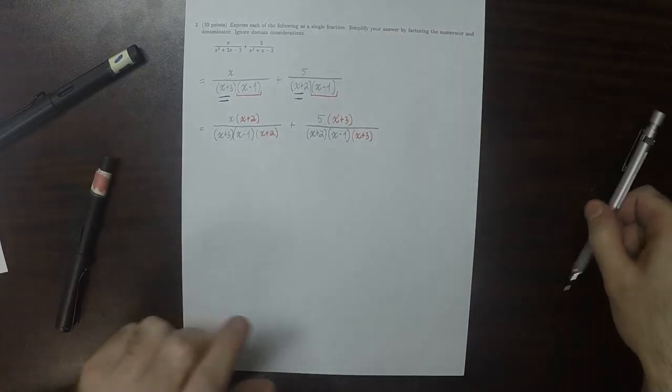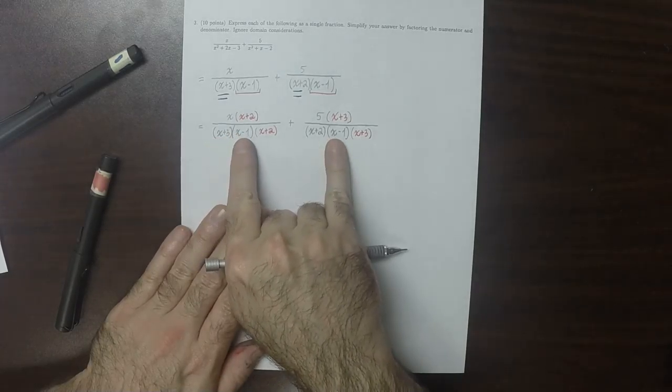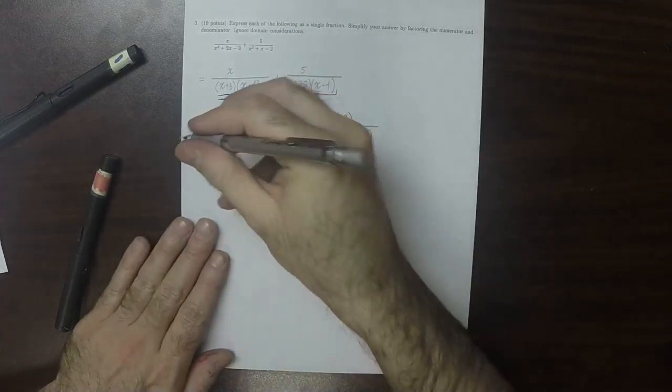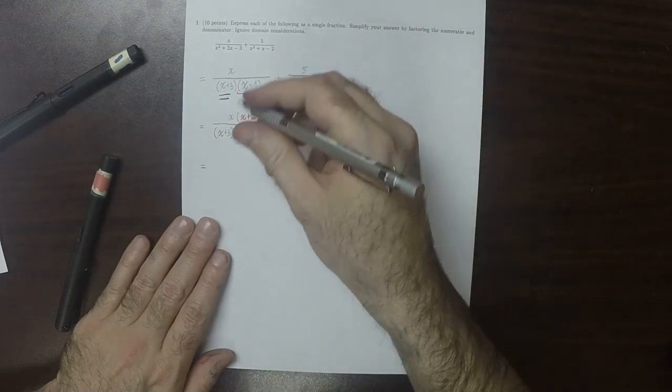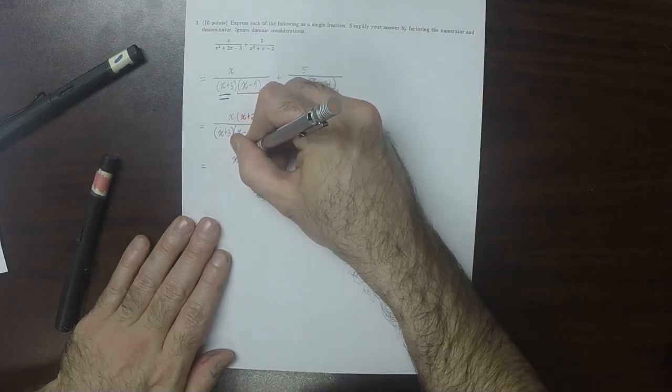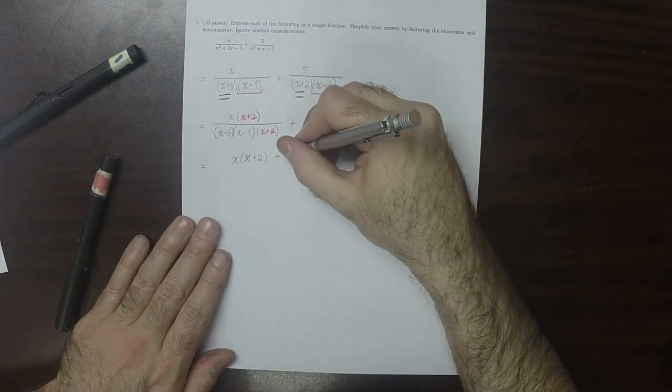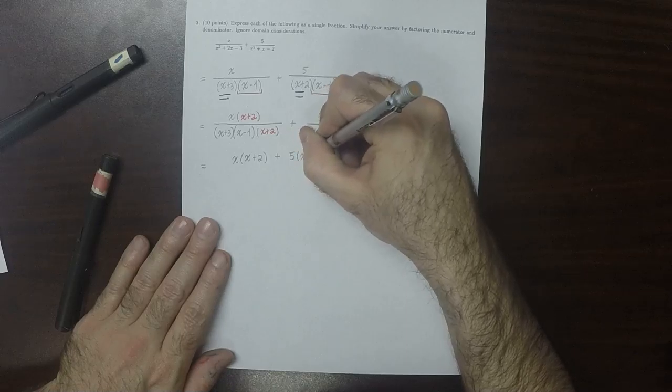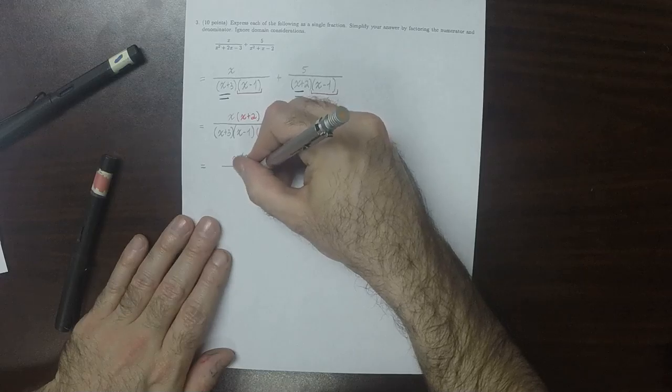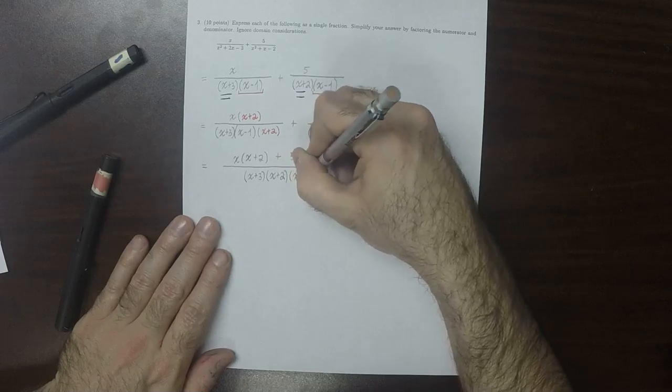And now, these two have the same factors in their denominators. They both have x plus 3, they both have x minus 1, and they both have x plus 2. So that means that we can add these two together. So that will be x times x plus 2 plus 5 times x plus 3, all over the same denominator. So x plus 3 times x plus 2 times x minus 1.